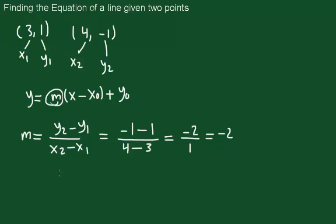Now we'll substitute this into the equation. And for x0 and y0, you can either use this point or this point. You can't mix, you can't take x from here and y from there, no. You just have to take the whole point.